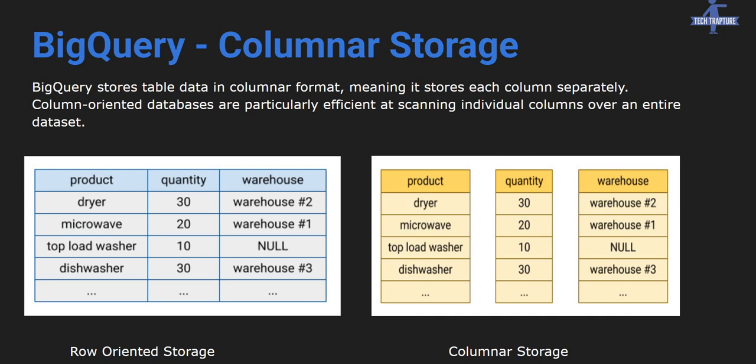One core concept while storing data in BigQuery is columnar storage. BigQuery is faster because it is built on the concept of columnar storage. In a traditional relational database, data is stored in a row-oriented format — it stores data row by row. But in BigQuery's columnar storage, it stores data column by column — all details of one column are stored together, then the second column's details together. It scans data column by column as well. This will be explained further in the next video on BigQuery partitioning.